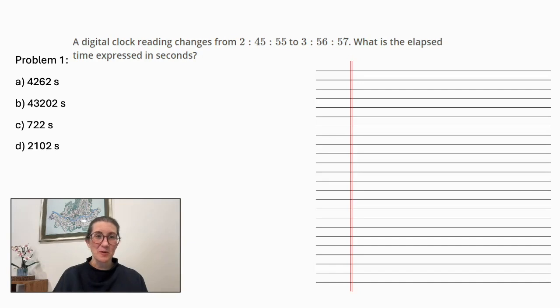Problem number one. A digital clock reading changes from 2:45:55 to 3:56:57. What is the elapsed time expressed in seconds? A. 4,262 seconds. B. 43,202 seconds. C. 722 seconds. Or D. 2,102 seconds.